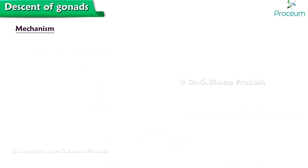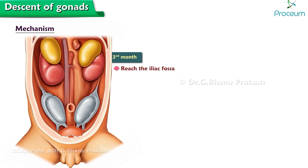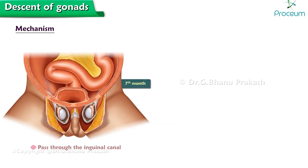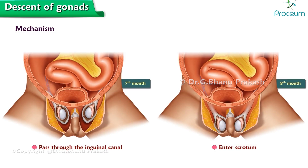Here's the mechanism of the descent of the testes. The testes develop in relation to the lumbar region of the posterior abdominal wall. During fetal life, they gradually descend to the scrotum. They reach the iliac fossa during the third month and lie at the site of the deep inguinal ring up to the seventh month of intrauterine life. They pass through the inguinal canal during the seventh month and are normally in the scrotum by the end of the eighth month.